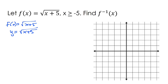I'm going to write it in terms of y and x. I'm going to flip x and y. In order to get rid of the square root sign, I'm going to square both sides. And then I'm going to subtract 5 from each side. So we have y equals x squared minus 5.